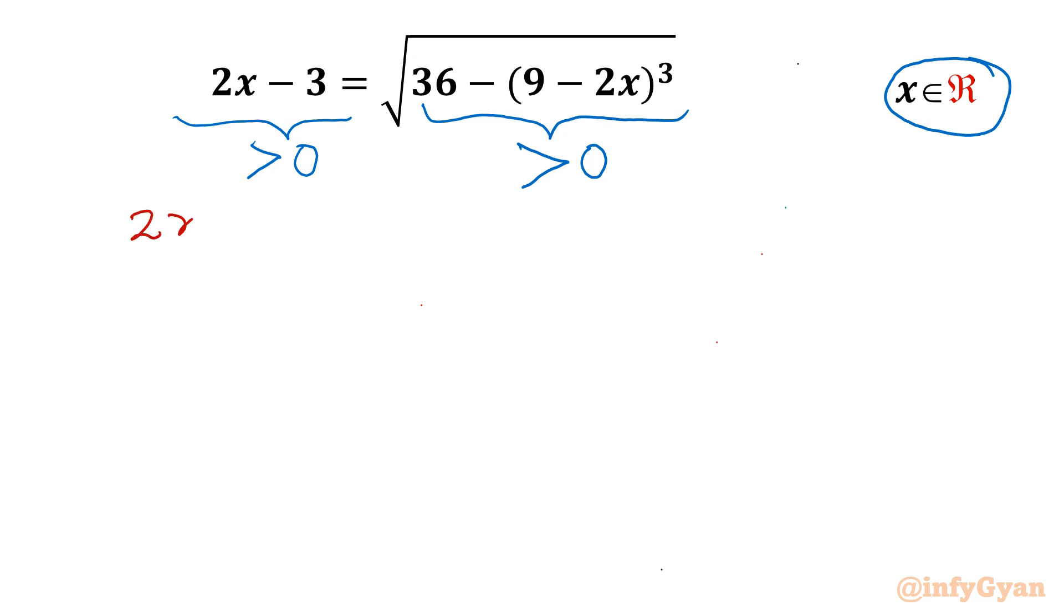So let me write here 2x minus 3 should be positive. Add 3 to this inequality, 2x should be greater than 3. Divide this inequality by 2, x should be greater than 3 over 2, or x should be greater than 1.5. So from the left hand side, x should be greater than 1.5.